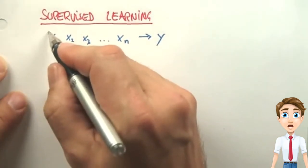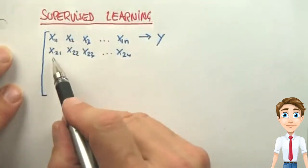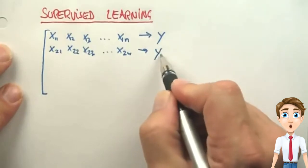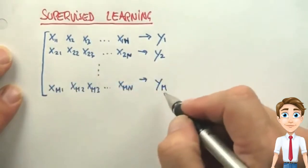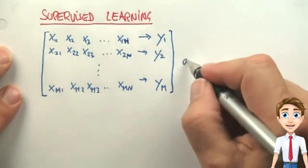Now in supervised learning, you're given many such examples. X21 to X2n leads to Y2 all the way to index m. This is called your data.